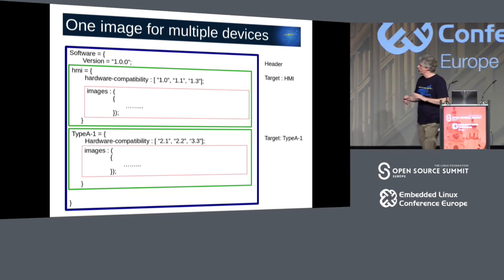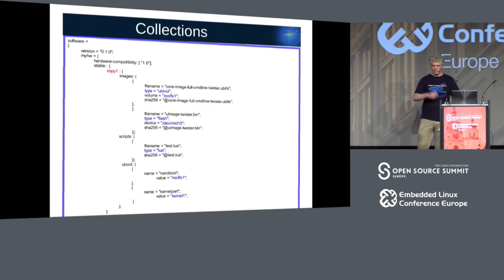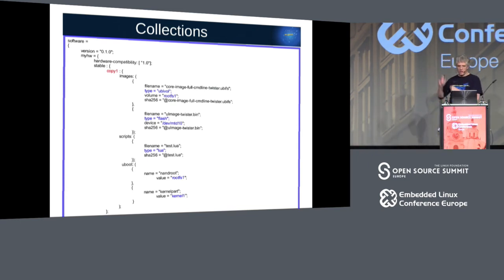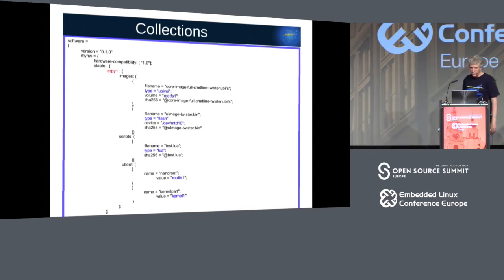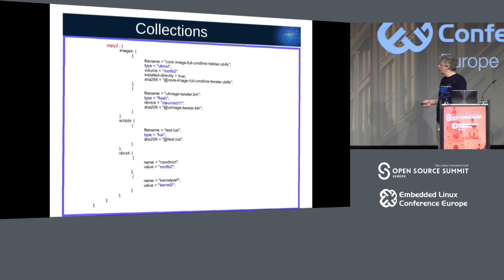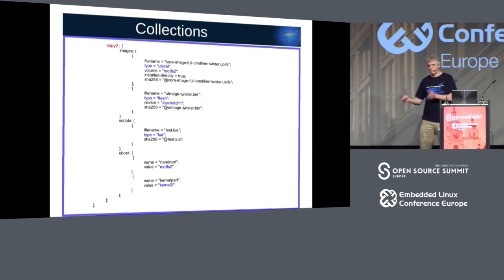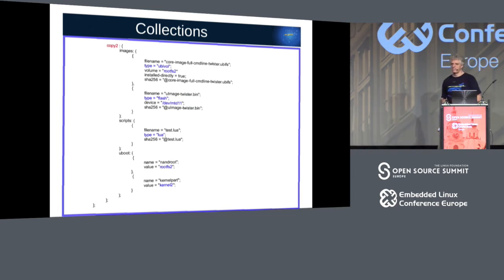Another way to select inside the description is using collections — my preferred way to implement double copy. I have a complete description for each copy. In copy one, for example with UBI, it should be installed in volume rootfs1 followed by setup of the U-Boot environment. The same is for copy two, but in another volume. When the system starts, I know which is the running copy and the standby copy — I pass this information to SWUpdate, and SWUpdate checks the software description and takes the part related to the standby copy.